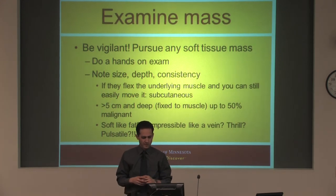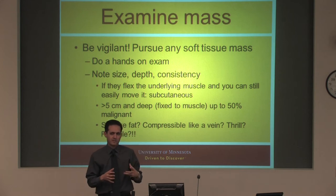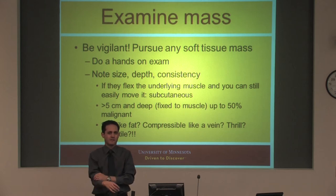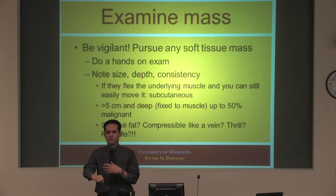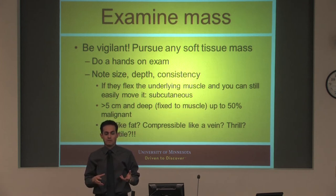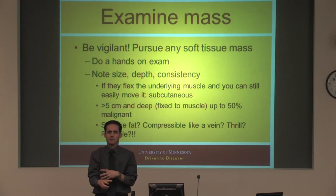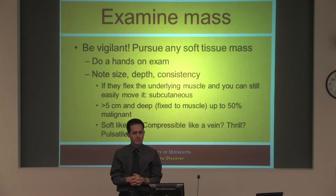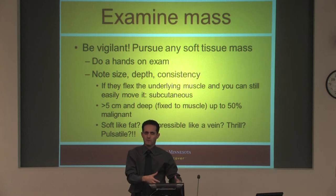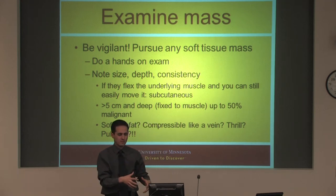Be vigilant — pursue any of these soft tissue masses. The hands-on exam: size, depth, consistency — document the size in your note for your follow-up at the very least. How can you tell depth on a physical exam? If it's in the subcutaneous tissue and the muscles tense, you can still move it around. If it's in the deep tissues, it will go from kind of mobile to really fixed when they're firing the muscles. That's important because large deep masses are more likely to be malignant.